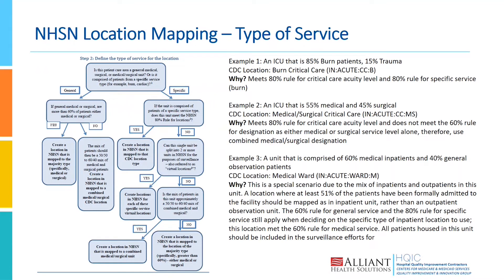The second step is defining the type of service on the location. For a general service location — a general medical or surgical area — greater than 60% of your patients are going to be either medical or surgical. If that's the case, then you're going to call it an adult medical ICU or an adult medical ward, for example. If there is not at least 60% of patients in a service category, you're going to call it a combined location. For example, a 50-50 mix of medical and surgical patients on the ward would be called a med-surg ward.